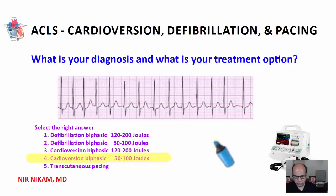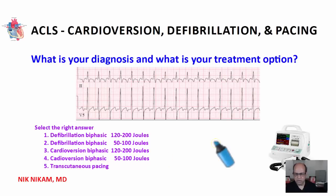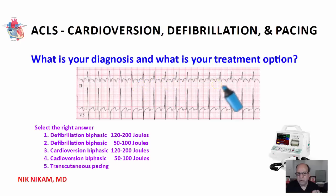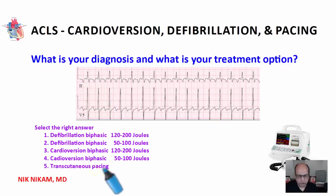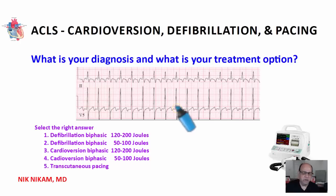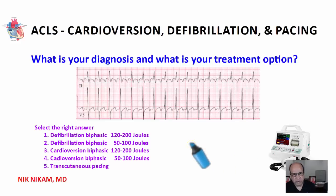Here is another example of a rapid ventricular response at 150 per minute, with a sawtooth appearance of the atrial activity — this is atrial flutter. Defibrillation is not needed; transcutaneous pacing is not needed. The treatment is cardioversion. The energy level is 50 to 100 joules — sometimes as little as 25 joules can work. If the patient is unstable, go to 50 to 100 joules to restore sinus rhythm and address the hemodynamics including blood pressure and oxygen level.